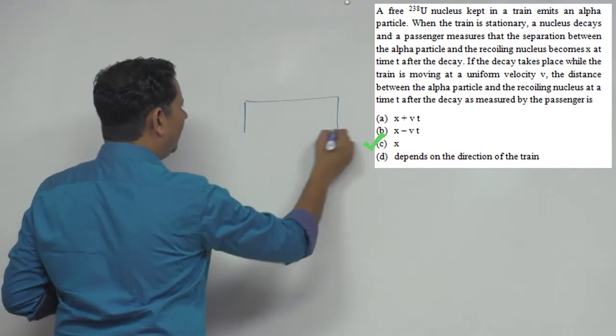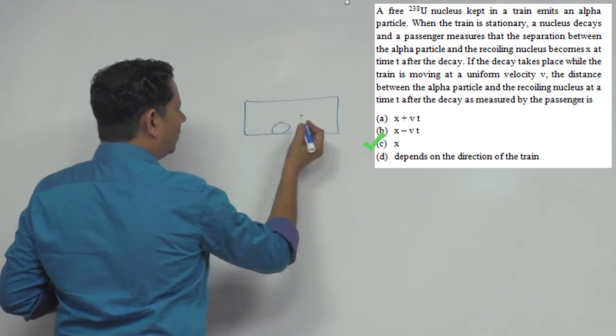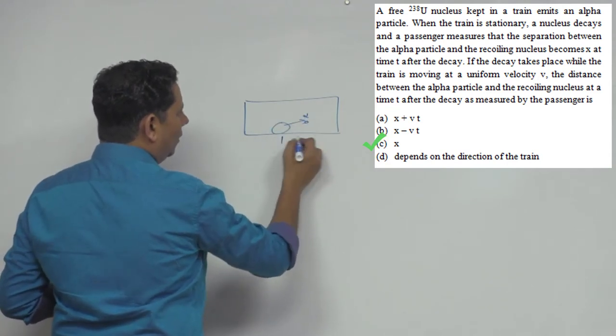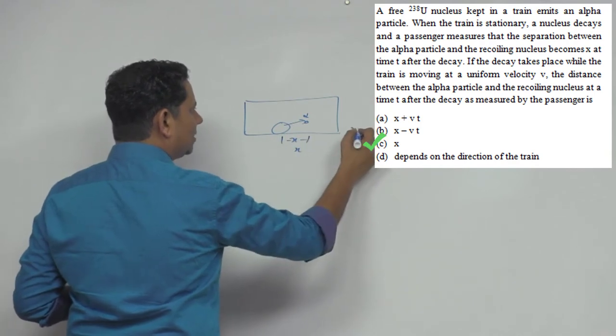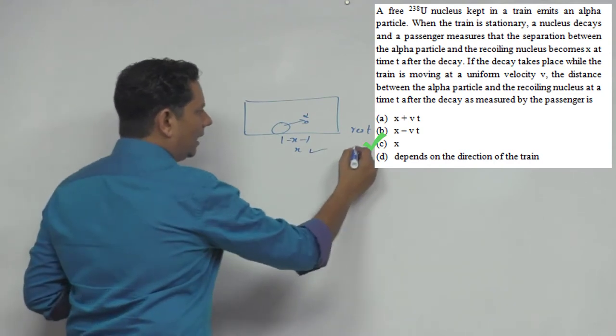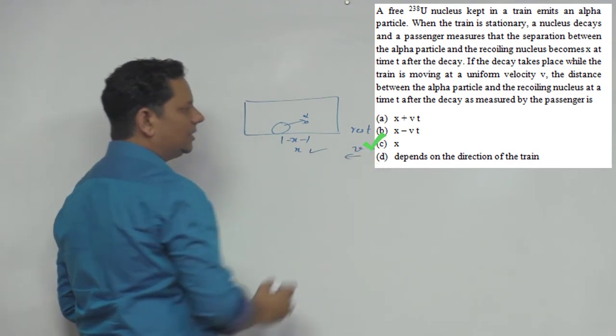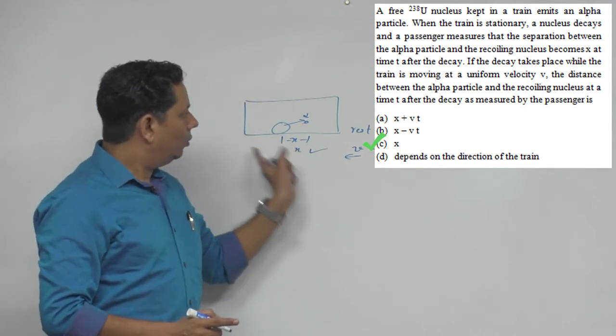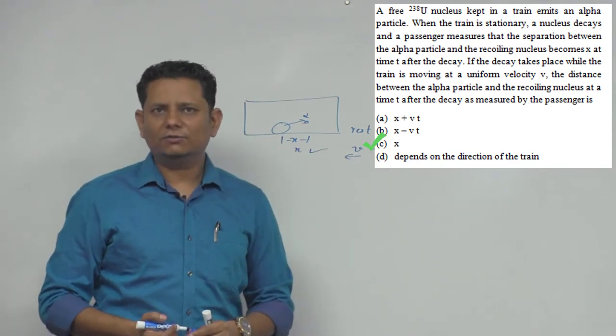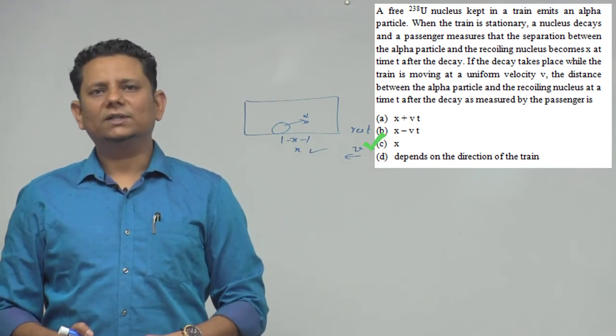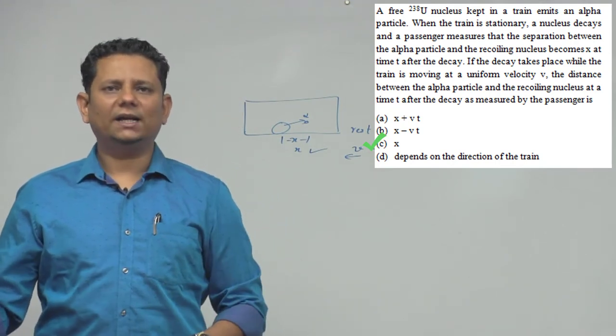The scenario is that the train is here and the uranium is here and the alpha particle is emitted. After time T, the distance is X. With constant velocity, the same value applies. If there is acceleration, the frame is a non-inertial frame and the values are different. But in this particular question, option C would be the right answer.